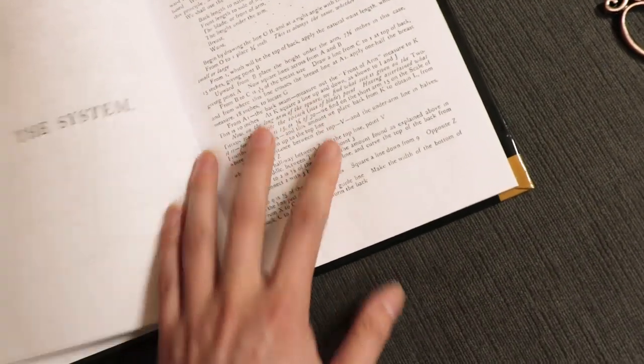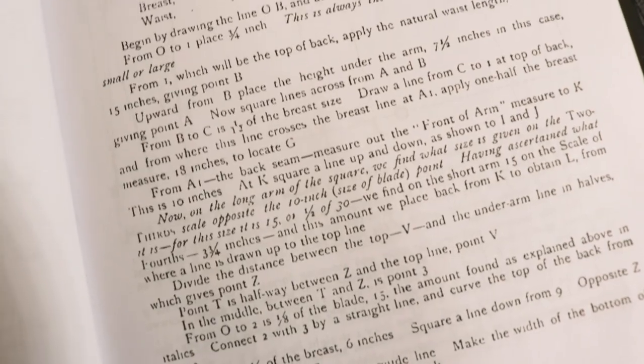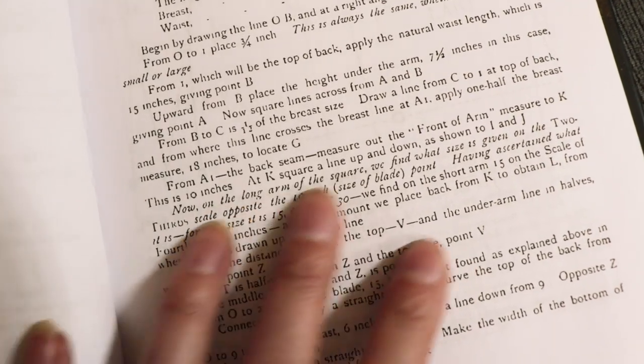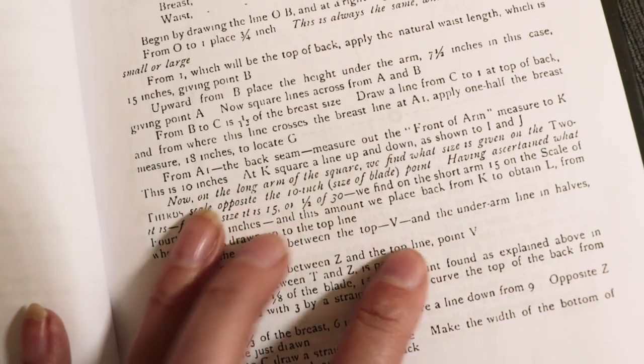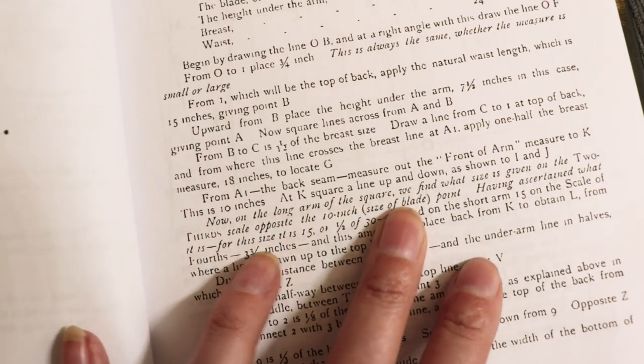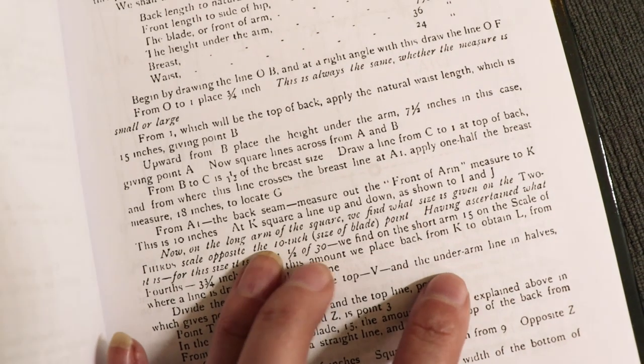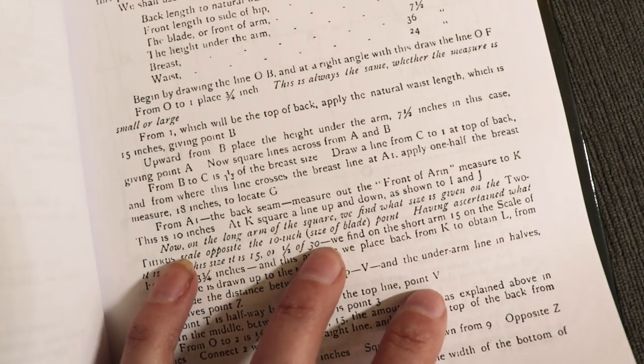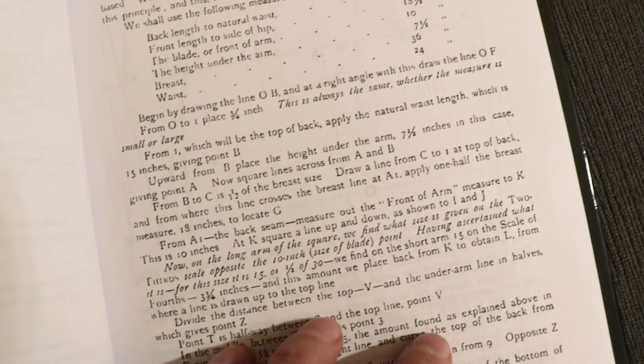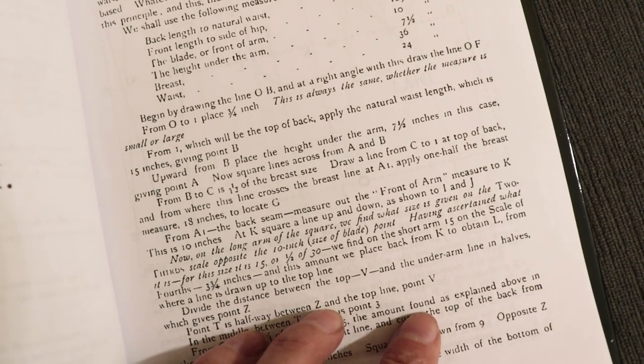Back to the drawing board. So when I was drafting this, I ended up having problems with this part. The way they explain the math is so weird. It's because it's old-fashioned. It says like, now on the long arm of the square we find what size is given on the two-thirds scale opposite the ten-inch size of blade point. And it's just like, what? Two-thirds scale opposite? I don't know what you're talking about. Yeah, I'm so confused.